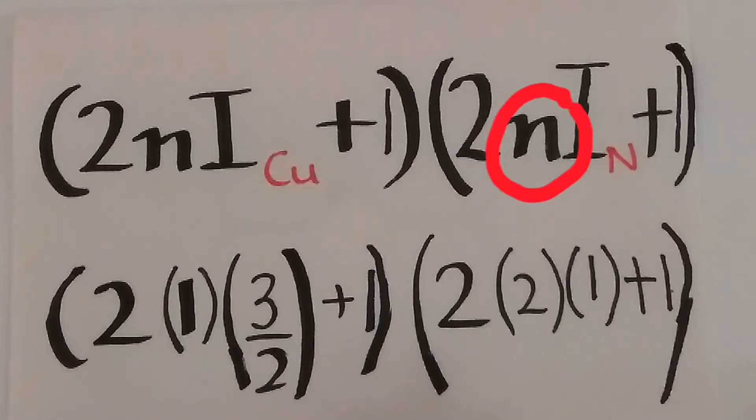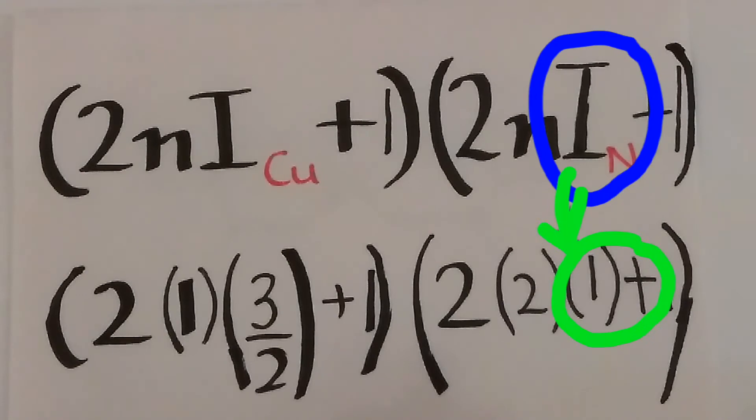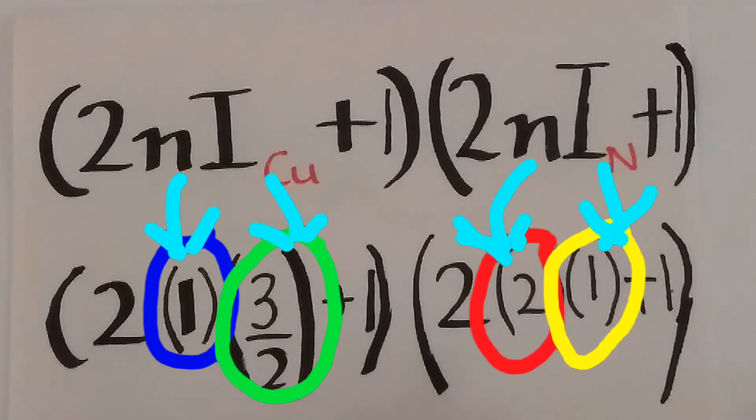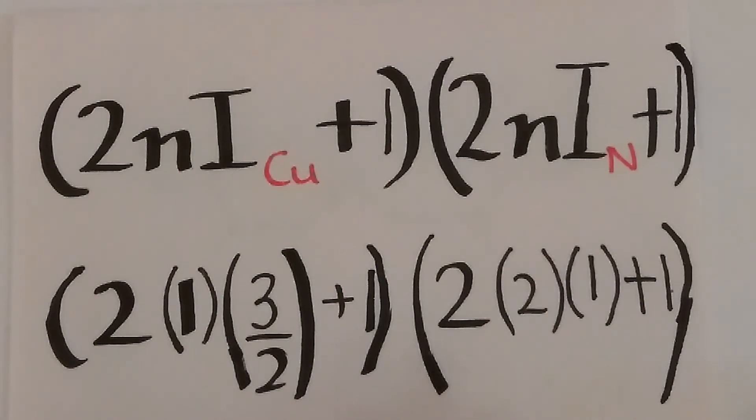This N stands for the number of nitrogen atoms which is 2. I is a spin state of nitrogen which is 1. Substituting the values and solving, we get the answer as 20.